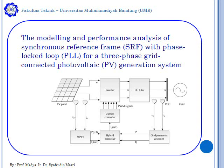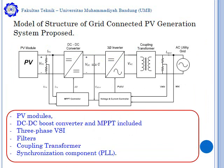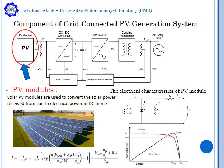In this figure, the model of the structure of the grid-connected PV generating system is proposed. It consists of the PV model component, DC-DC boost converter, and MPPT, including a 3-phase voltage source inverter, input filter, coupling transformer, and synchronization component for the PLL.